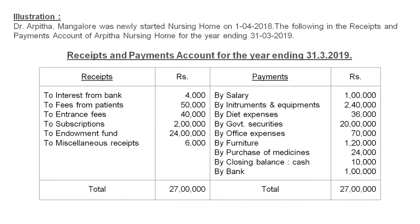They have given the receipts and payments account for the year ending 31-3-2019. On the payments side you have: salary, instruments and equipment, diet expenses, government securities, office expenses, furniture, purchase of medicine, and closing balance that is cash and bank. On the receipts side you have: entrance from bank, fees from patients, entrance fees, subscription, endowment fund, and miscellaneous receipts.